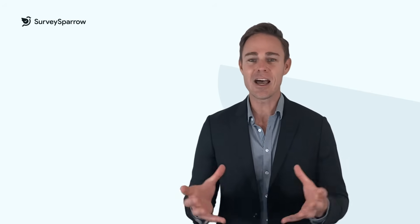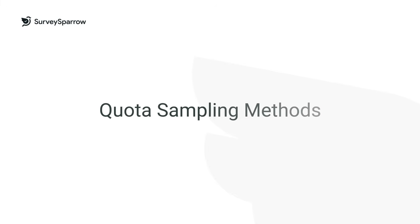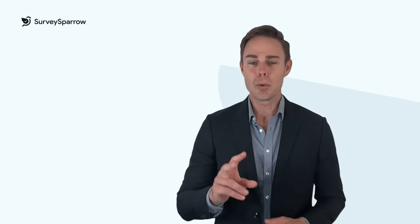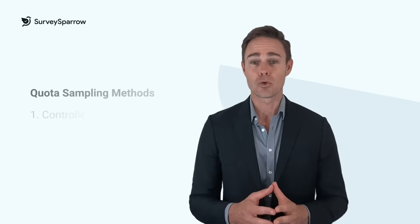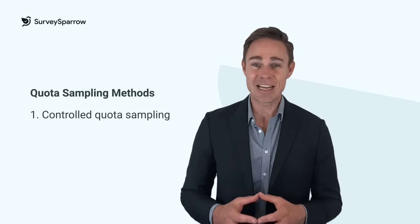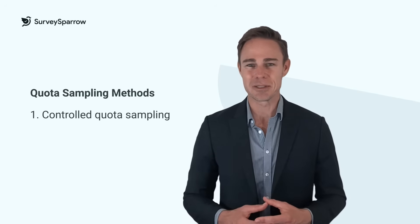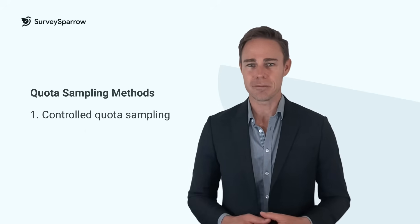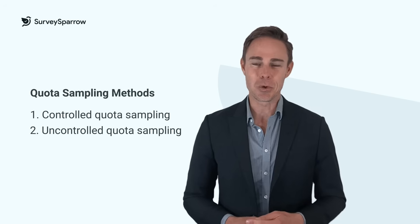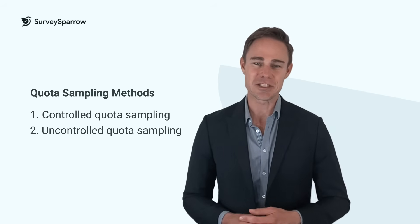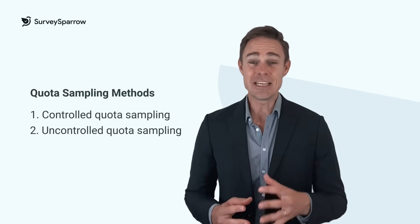Quota sampling methods can be divided into two broad categories. Controlled quota sampling: this method imposes specific limits on the researcher's choice of samples — for example, the sample size for each category cannot go beyond 50. Uncontrolled quota sampling: this does not place any limits or restrictions on the researcher's choice of samples.